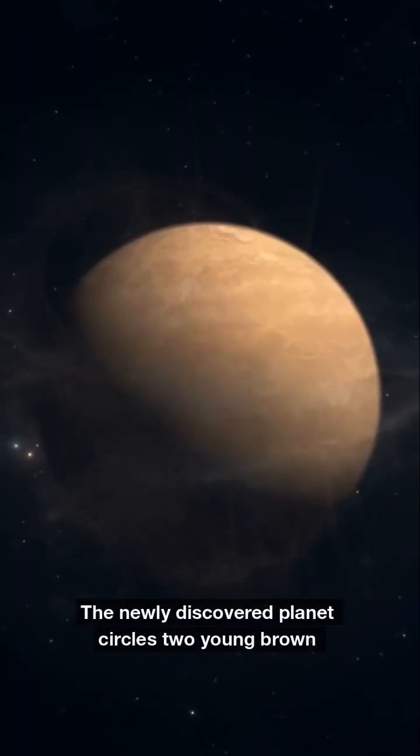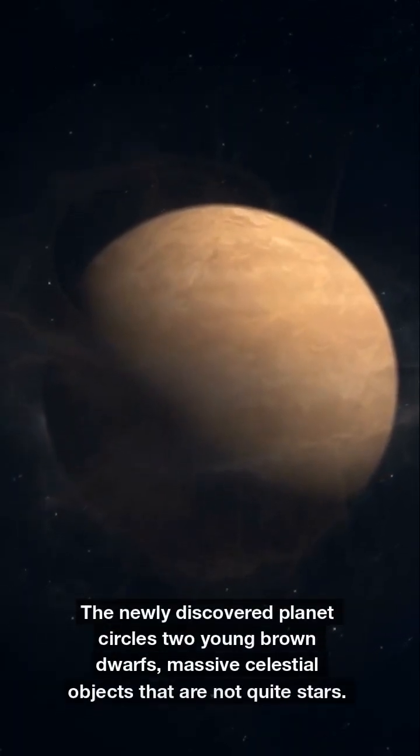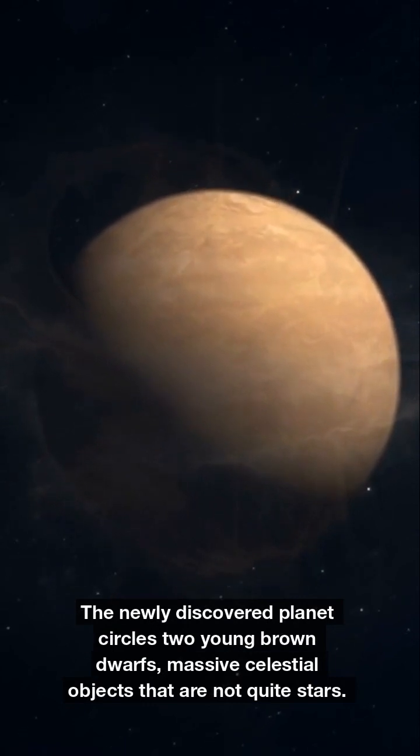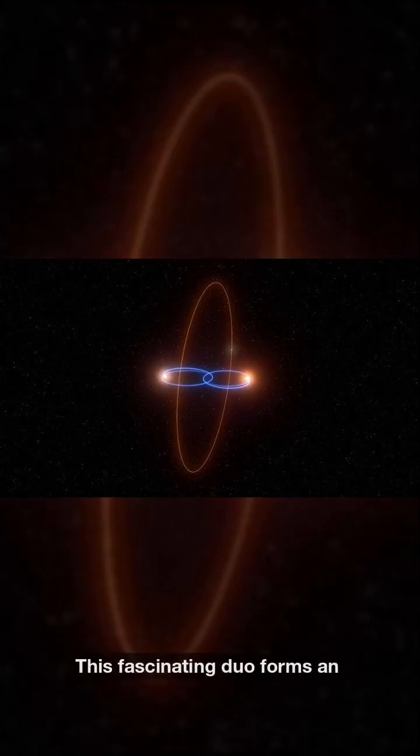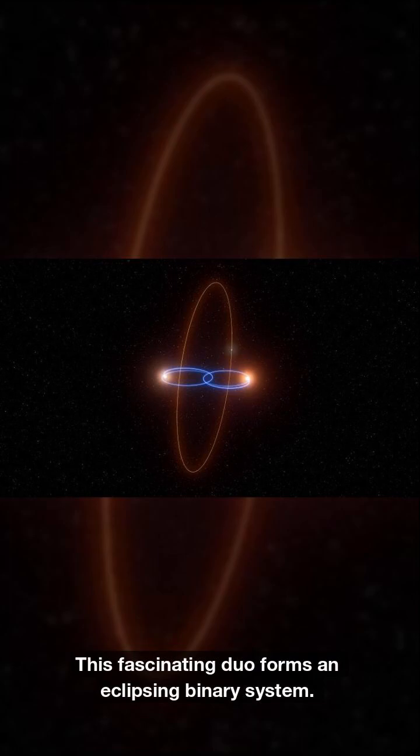The newly discovered planet circles two young brown dwarfs, massive celestial objects that are not quite stars. This fascinating duo forms an eclipsing binary system.